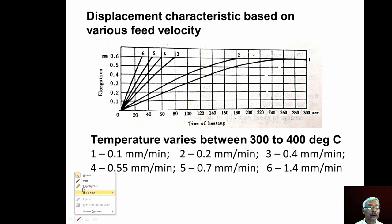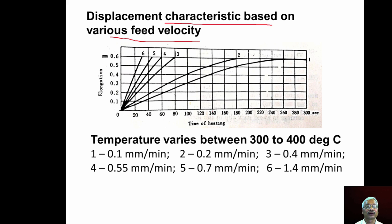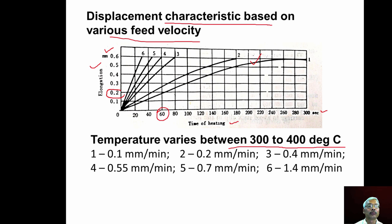Displacement characteristics for a particular material show the X-axis as heating time in seconds and the Y-axis as elongation in millimeters, with temperatures varying between 300 to 400 degrees Celsius. For different feed velocities, various curves are available. For example, with very slow heating over about 60 seconds, the elongation of the support material will be about 0.2 mm. By adjusting the heating time, different displacements can be achieved.